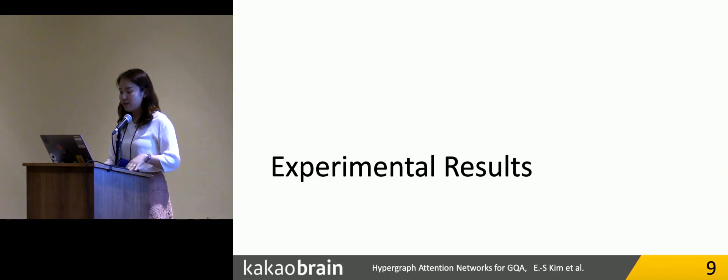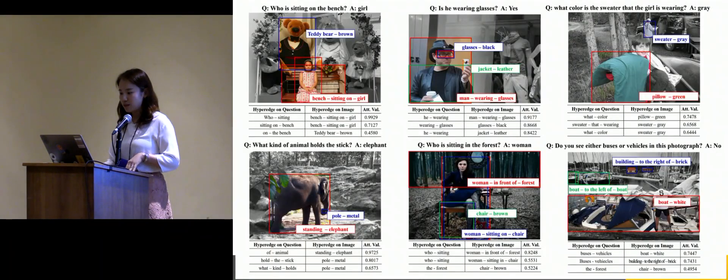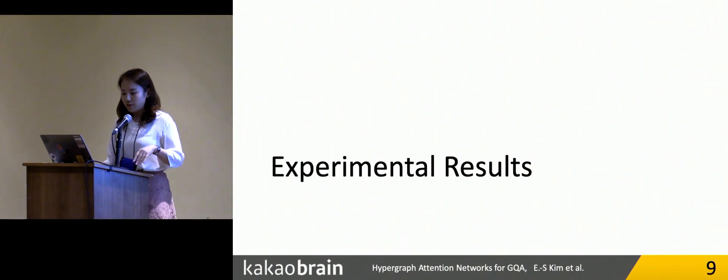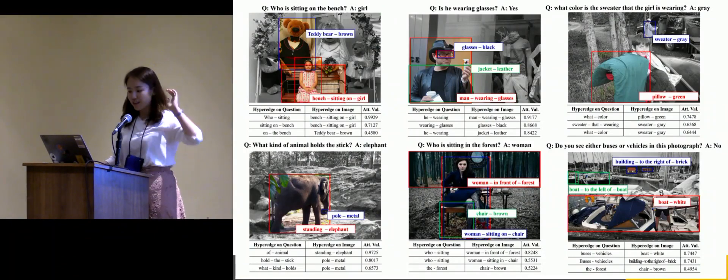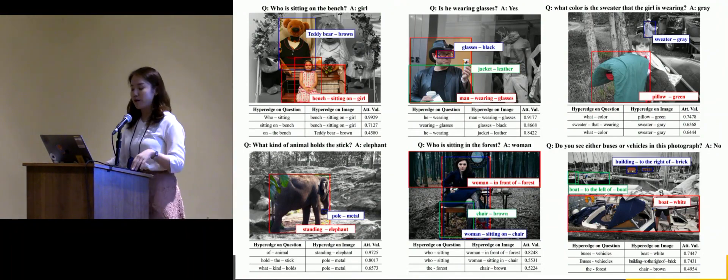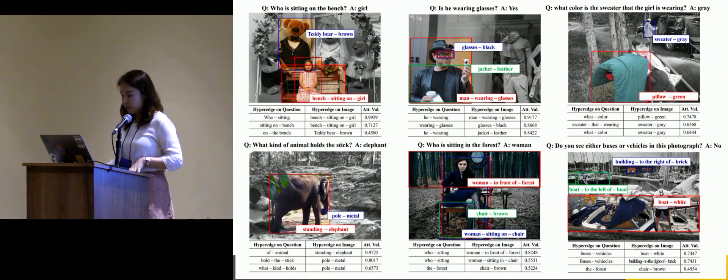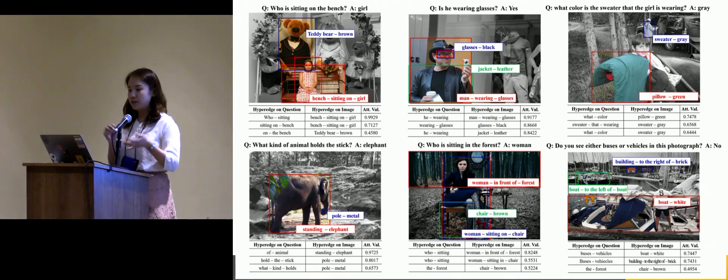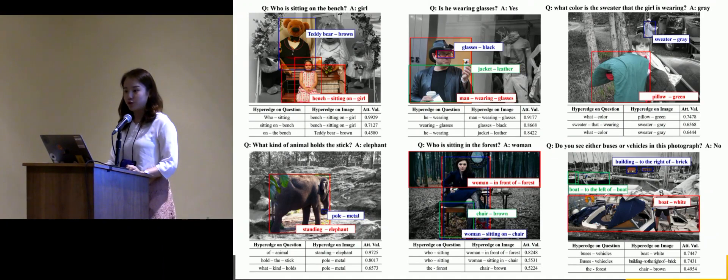For the experimental result, we visualize the attention matrix by the hypergraph attention networks. You can see that the suggestion of the attention method by matching the semantics of subgraphs works well, at least in this dataset, and it is very helpful to GQA task.